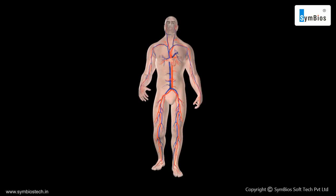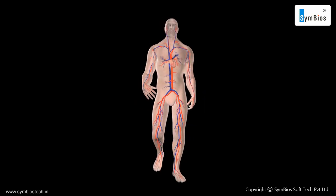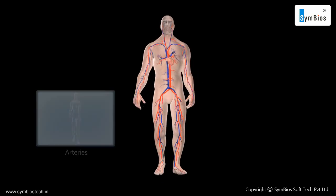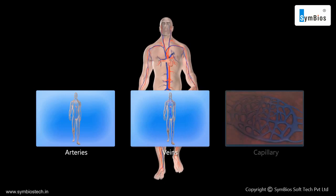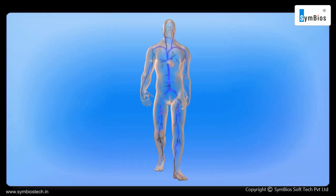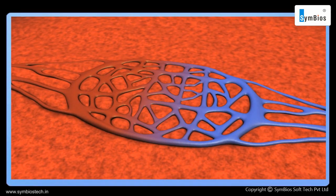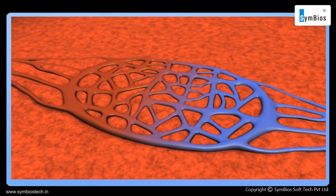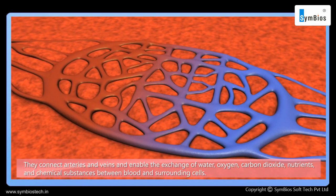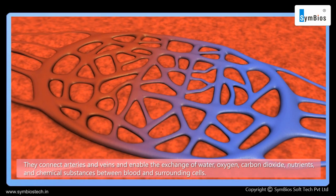Blood vessels are a series of tubes attached to the heart through which blood flows in our body. There are three types of blood vessels: arteries, veins, and capillaries. Arteries carry oxygenated blood away from the heart. Veins carry blood from the organs back to the heart; in most cases this blood is deoxygenated. Capillaries are the smallest blood vessels, with a thickness of only one cell. They connect arteries and veins and enable the exchange of water, oxygen, carbon dioxide, nutrients, and chemical substances between blood and surrounding cells.